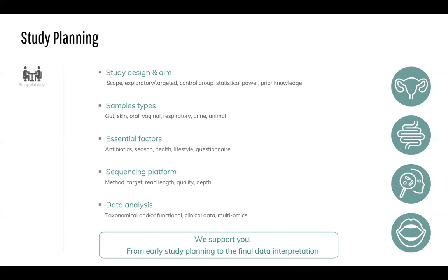The sequencing platform determines what analysis you can do. Considerations include which method, which target gene, the read length needed, the quality required, and the sequencing depth. For data analysis, you should consider whether you want taxonomical differences only or also gene functions, and whether you need to integrate clinical data or plan a more complex multiomics analysis — for example, incorporating metabolomics data. All of this planning is essential for the outcome of the study.